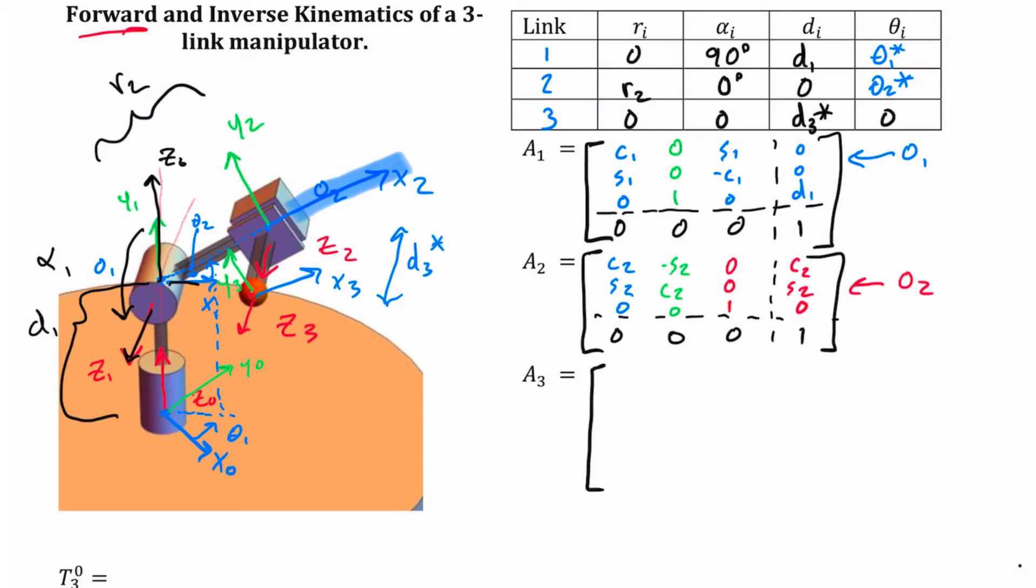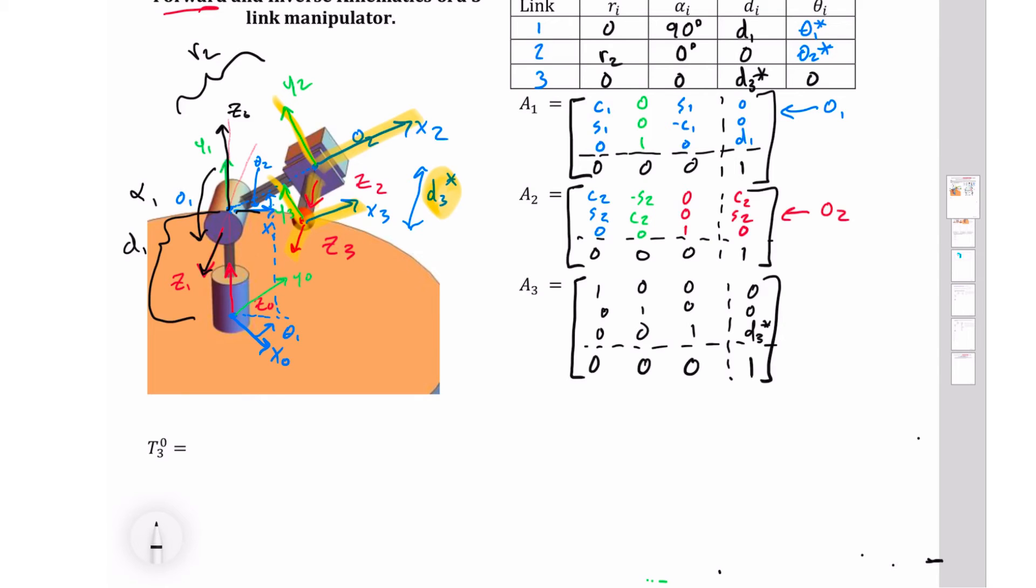Final frame to worry about is my A3. Again, I can put my easy stuff in here. 0, 0, 0, 1. This one, there's no rotation because my x3 is parallel to my x2, my y2 is parallel to my y3, my z2 is parallel to my z3. The only difference that I have is this d3 offset. So this frame is delightfully simple. We've got our identity matrix here, and then 00d3 star.